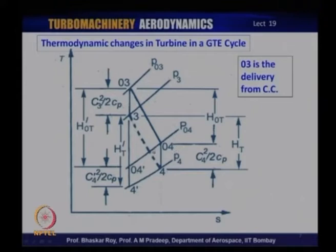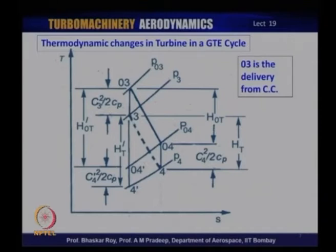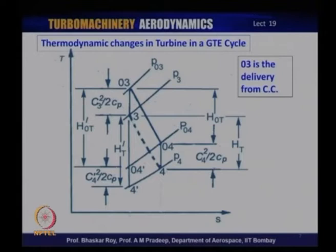In a turbine, the work extracted is often somewhat less than the ideal work that would have been possible if the process were thermodynamically and gas dynamically ideal. As a result, there is an efficiency attached to the working of the turbine, typically expressed as the ratio between the real work and the ideal work — referred to as the isentropic efficiency of the turbine. For simplification, it is often assumed that the real and ideal exit velocities C4 and C4 prime are equal to each other.